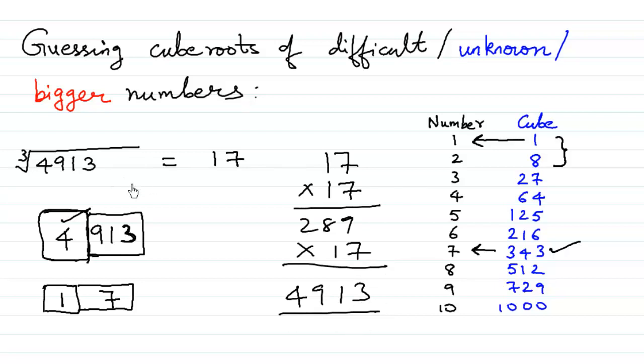Remember, such methods or such tricks are only useful if the number is a perfect cube. If, let's suppose, I just change this digit from 1 and write a 3 over here, we still get the answer as 17, but in fact if you multiply 17 and 17 and 17 to find the cube you shall be getting 4913 and not 4933. So it's very important that we assume or consider this to be a perfect cube. Only if it's a perfect cube we can get the correct answer, otherwise we will not.